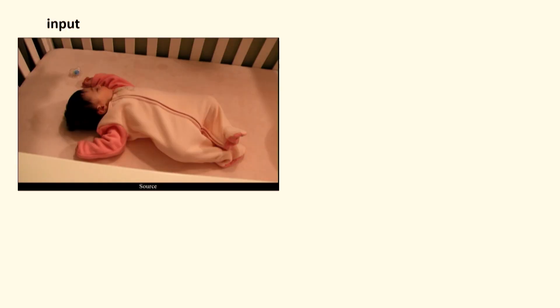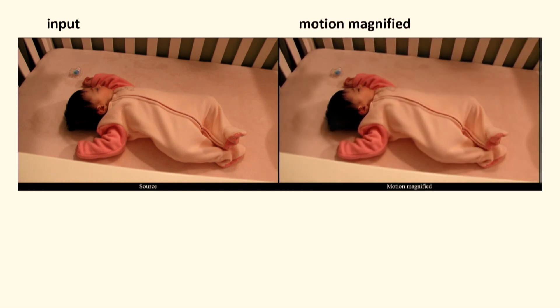Suppose you're a parent of a perfectly healthy newborn — this is a newborn baby sleeping — and you wonder, is the baby breathing? You can use the motion microscope to analyze those small motions and amplify them to let you see them. Like a microscope or a telescope, this is sensitive to what's out there in nature and just brings to the forefront aspects that are otherwise hidden from you — in this case, lets you see the motion.